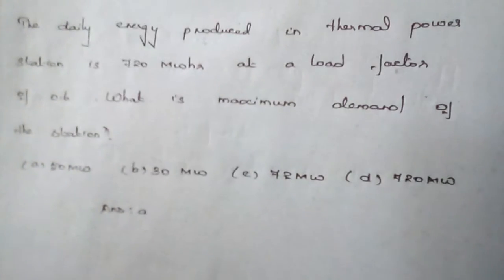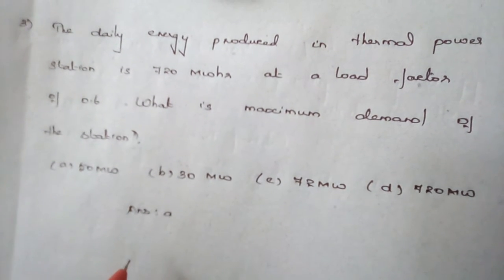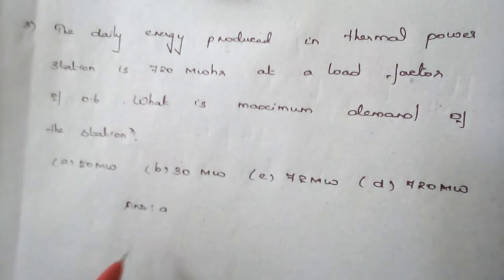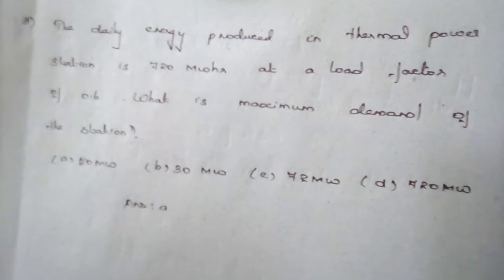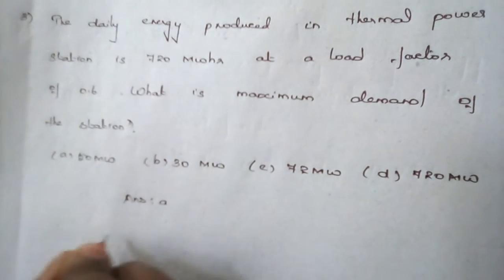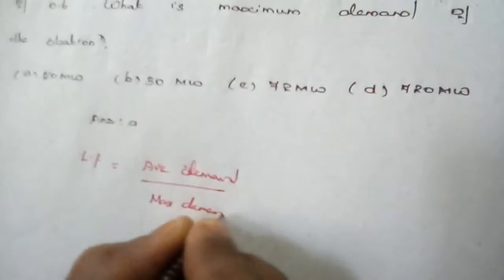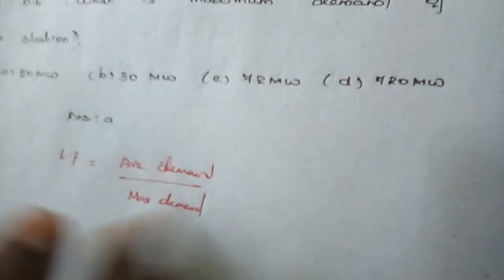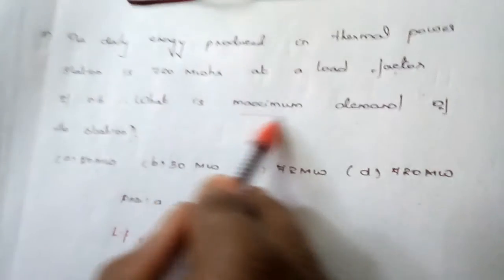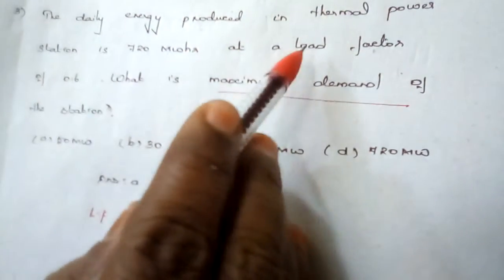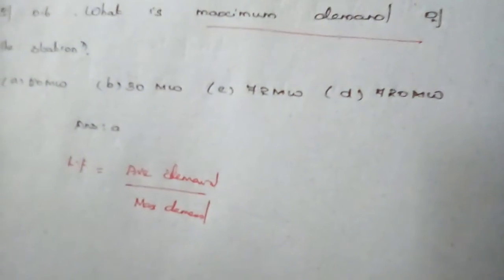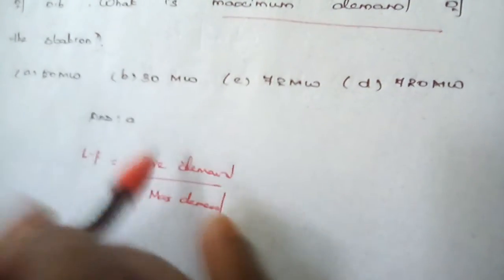In question number three, we are supposed to find the maximum demand. In the previous two cases we found the load factor; now we learn to find the maximum demand. We know the formula: load factor equals average demand divided by maximum demand. The load factor and energy consumption are given, but not the average demand directly.